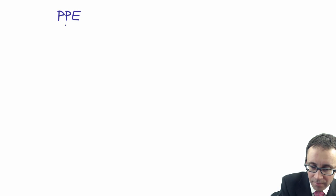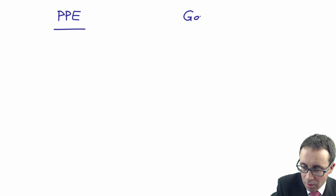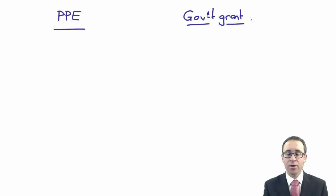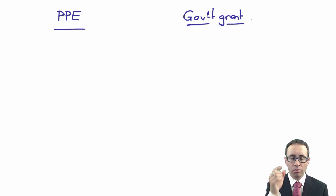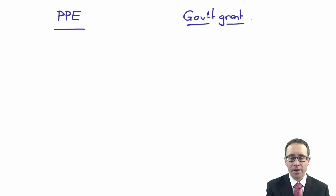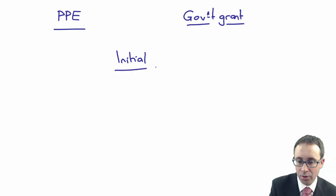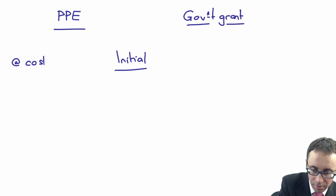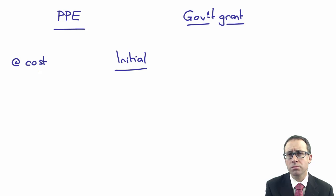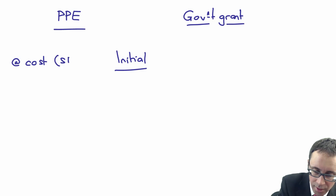We're thinking about PPE and also about the government grant. You can use headings, but don't separate your page out into separate halves — it doesn't look right. There are presentation marks going for your structure and your clarity. Using headings helps you think about the two separate aspects. You can think about things at your initial recognition. The property, plant and equipment — we recognise it initially at cost. Where do we show the cost in the statement of financial position? Explain to the examiner that you recognise it at cost, and the amount was $10 million.